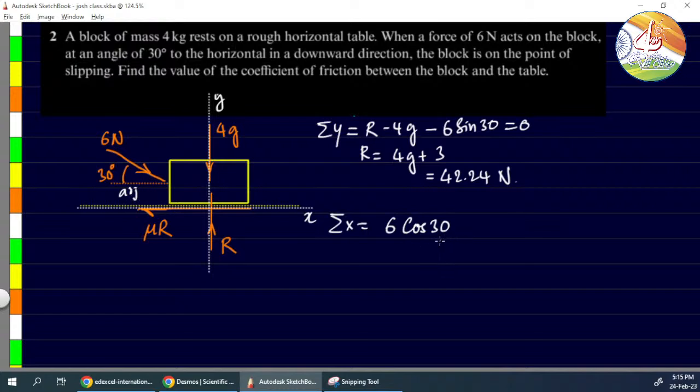6 cos 30 acts in the forward direction, so it's positive. Friction acts left, so minus μR. These are the only two horizontal components. Total should be zero.